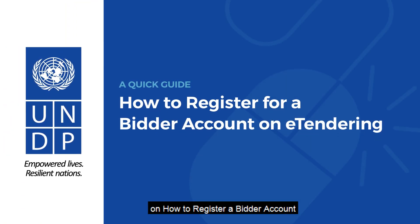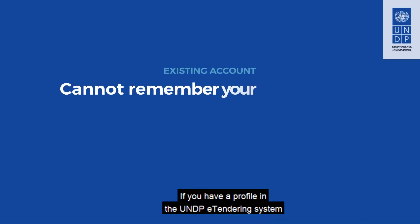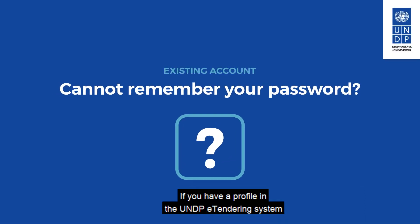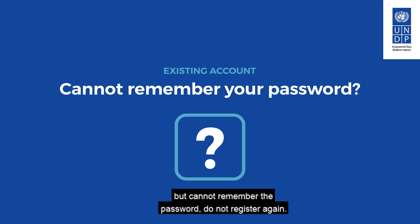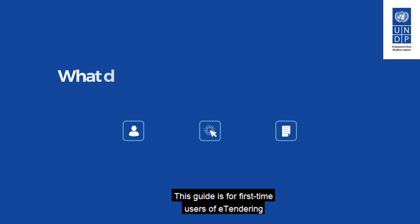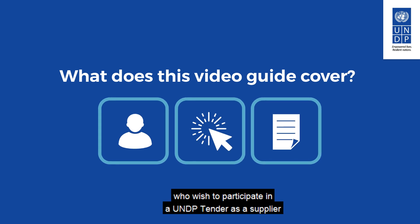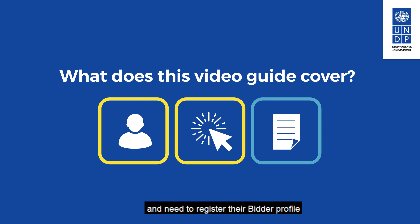Welcome to this video guide on how to register a bidder account in the online eTendering system for the United Nations Development Program, UNDP. If you have a profile in the UNDP eTendering system but cannot remember the password, do not register again. Skip to the end of this video to see how to reset your password. This guide is for first time users of eTendering who wish to participate in a UNDP tender as a supplier and need to register their bidder profile on the UNDP eTendering system.